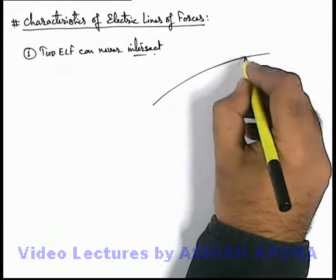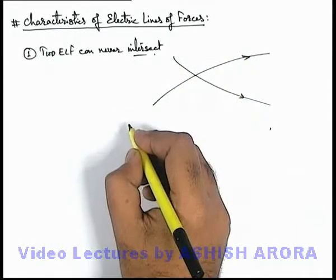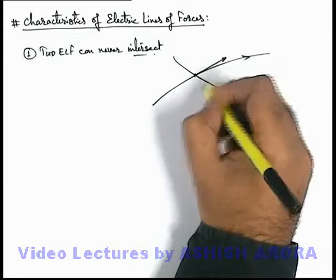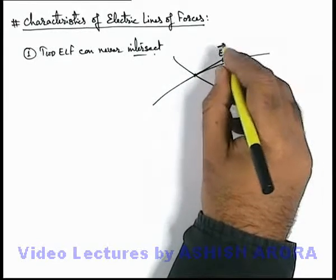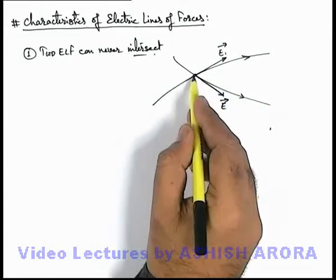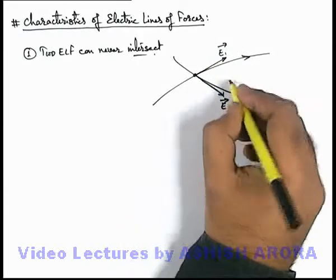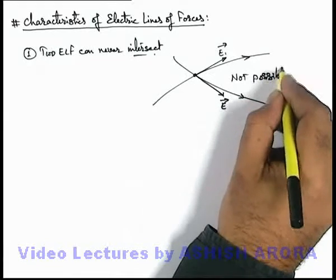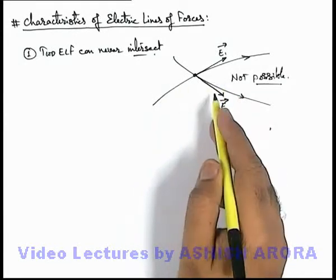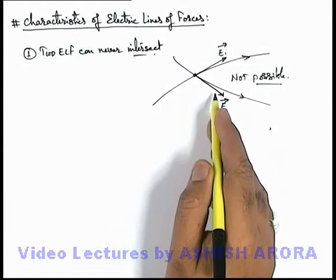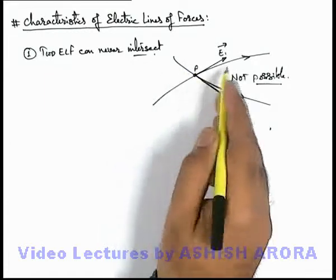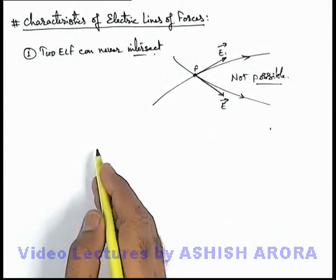This is quite obvious. If one electric line is going in one direction and another electric line in another direction, and we consider these are intersecting at a point, then at that point due to one line the electric field will be in one direction, and due to another line the electric field — which is always along the tangent — will be in a different direction. At one point there would be two directions of electric field, which is not possible, because at any point in an electric field there exists only one direction. So whenever such a situation arises, the electric line of force configuration gets modified and finally there will be only one electric line of force at that point.